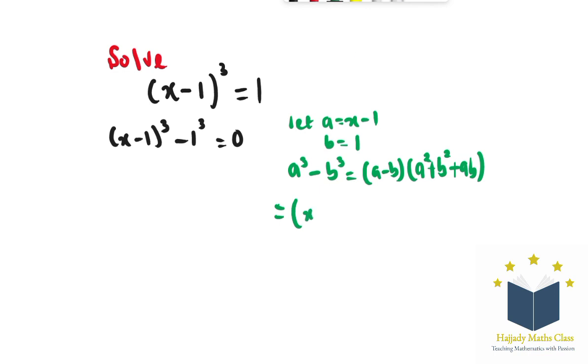Now substituting in the value of a and b, I'm going to have x minus 1 minus b which is 1, times a squared which is x minus 1 squared, plus b squared which is 1 squared, plus ab which is x minus 1 multiplied by 1.